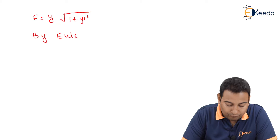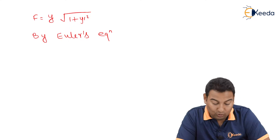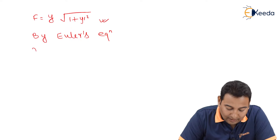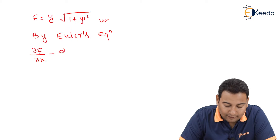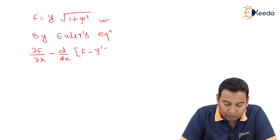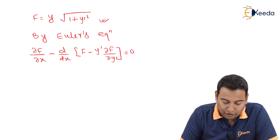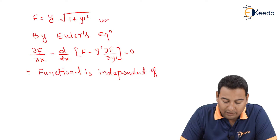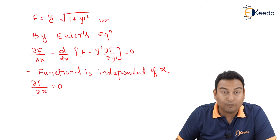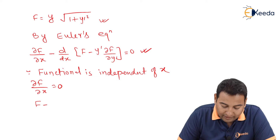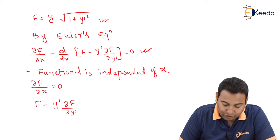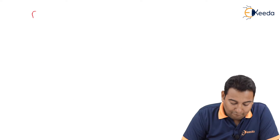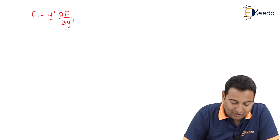By Euler's equation, two options we have: equation number 1 and equation number 2. If you see this functional, it is independent of x, therefore I am going to use equation number 2. The equation is: ∂f/∂x minus d/dx of (f minus y dash · ∂f/∂y dash) equals zero. Since the functional is independent of x, ∂f/∂x equals zero. Substituting, we get: f minus y dash · ∂f/∂y dash equals zero.